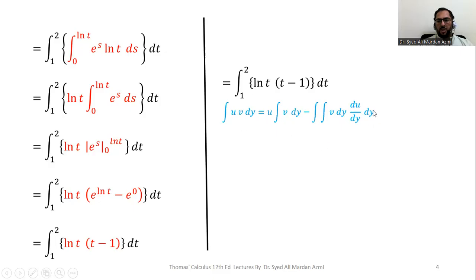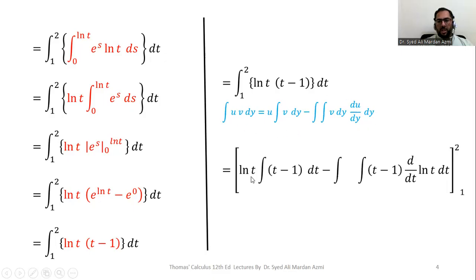If u and v are functions of t, we apply integration by parts with u = ln(t) and v = (t − 1), replacing dy with dt. We get: ln(t) · ∫(t − 1) dt − ∫(t − 1) · (1/t) dt. The integral of (t − 1) is t²/2 − t, and the derivative of ln(t) is 1/t.